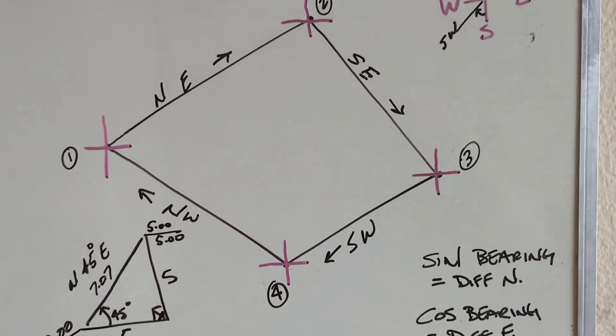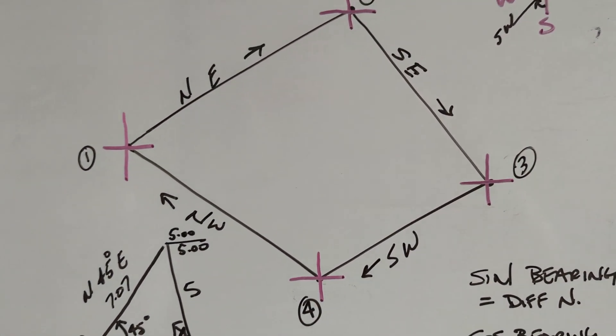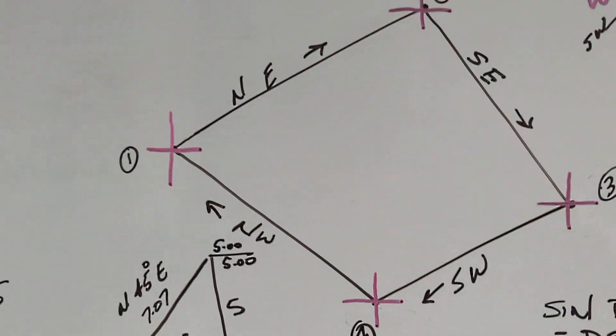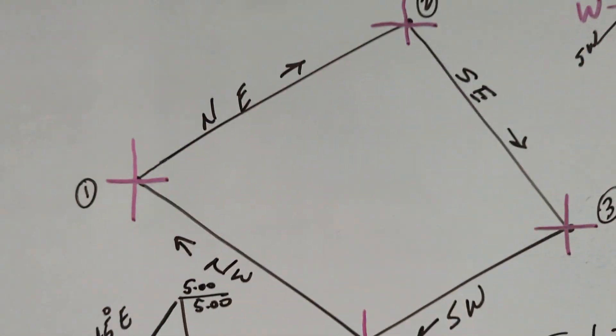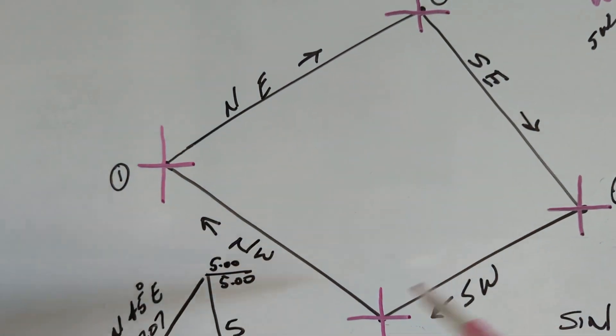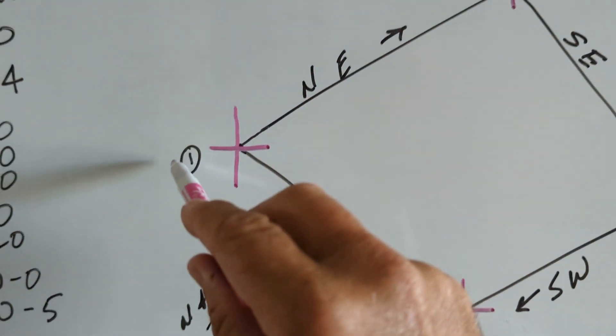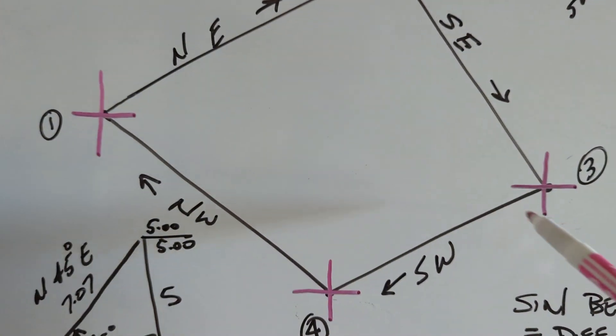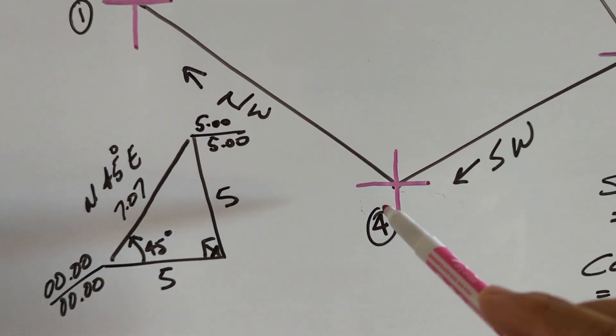All right, this is your friendly neighborhood surveyor. The guy on our crew is learning and had questions about bearings. So let's pretend like this is a piece of property. We're going to call this 0.1, 0.2, 0.3, 0.4.